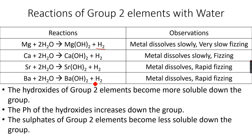The hydroxides of group 2 elements become more soluble down the group, while the sulfates of group 2 elements become less soluble down the group. You don't need to know the reason behind this right now — it will be explained when you study lattice energy at A2 level. For now, just remember: solubility of hydroxides increases and solubility of sulfates decreases going down group 2.